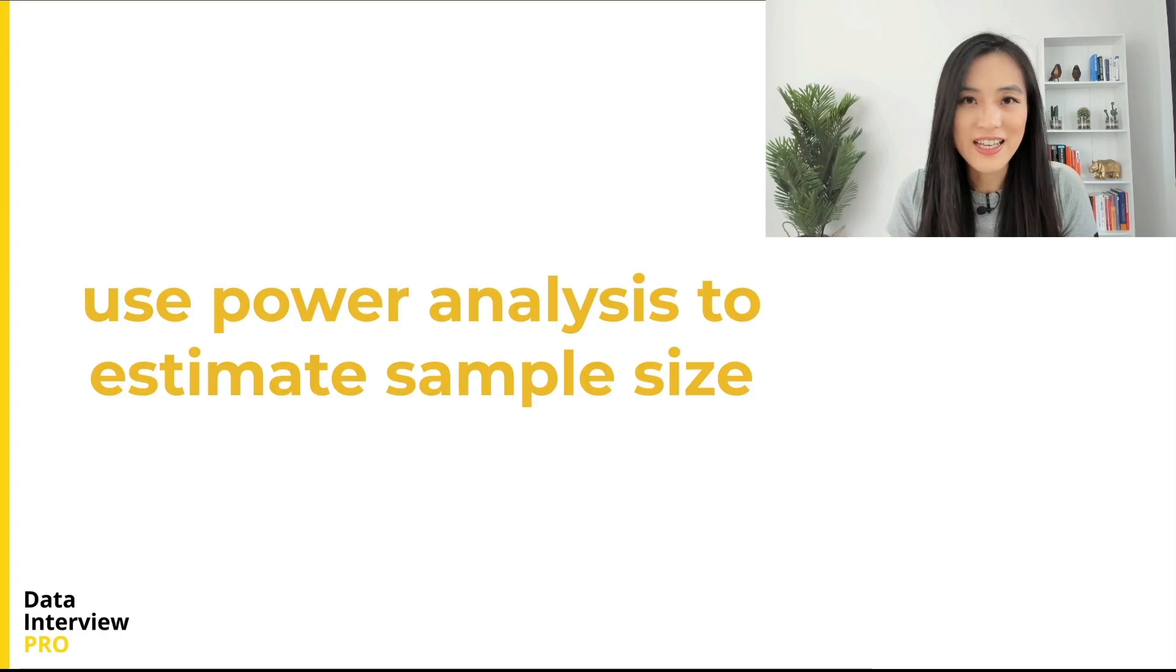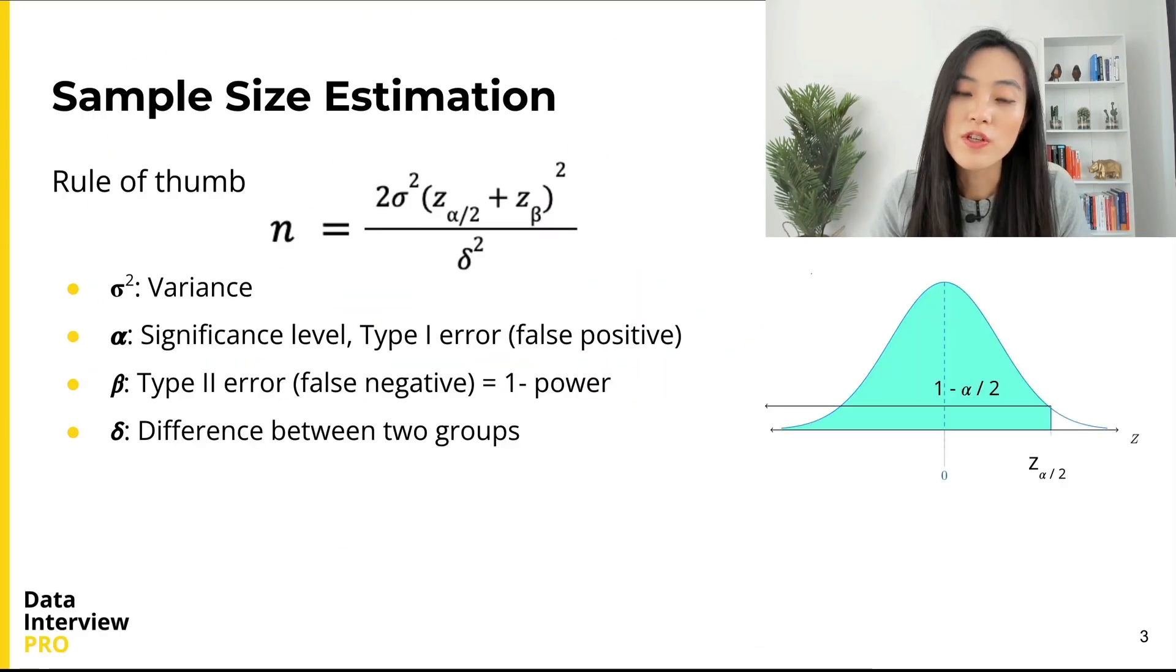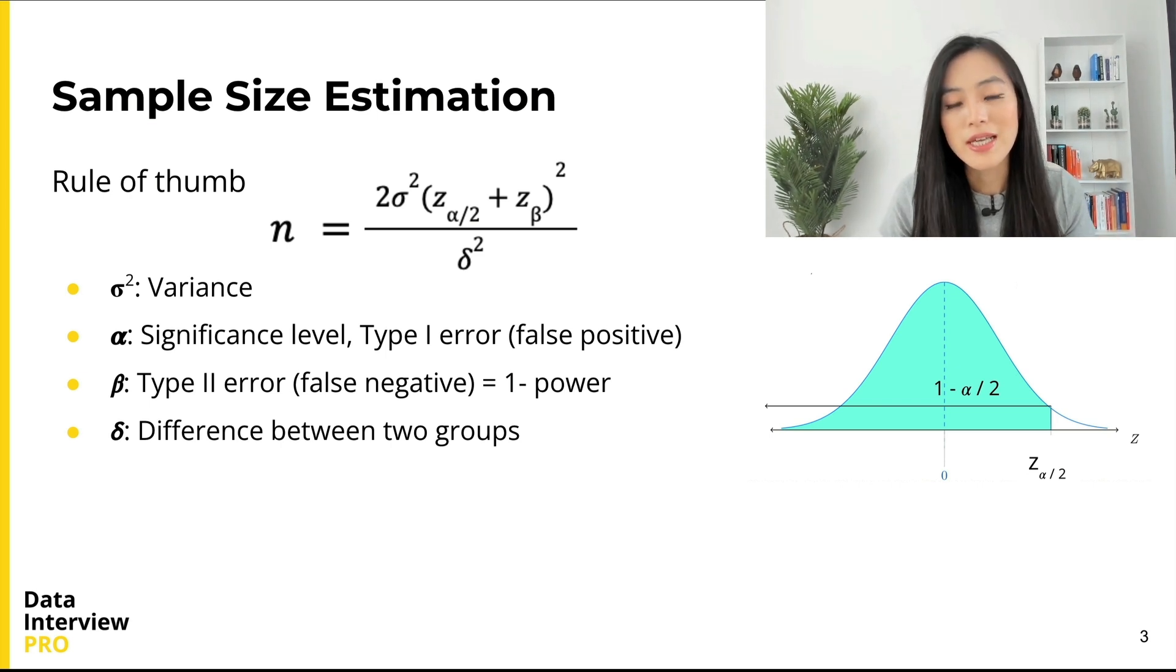Let's first review the general form of sample size estimation, which is: n = 2σ²(z_{α/2} + z_β)² / δ², where σ² is an estimate of variance, α is a significance level (also the same as Type I error or false positive rate).